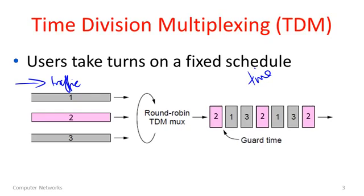You can see that the pink user, user 2, gets to send some information at the beginning. Then the user has to wait and sends no information while users 3 and 1 send, and later user 2 will get to send again on a regular schedule. There may be a very small gap between transmission times called the guard time, just to allow for a transition from one source to another.